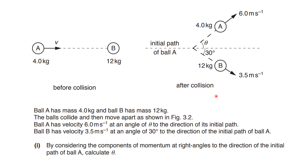Now we have a description of this diagram. Ball A has mass 4 kg and ball B has mass 12 kg. The balls collide and then move apart as shown in this picture. Ball A has velocity 6 m/s at an angle theta to the direction of its initial path. Ball B has velocity 3.5 m/s at an angle 30 degrees to the direction of the initial path of ball A. By considering the components of momentum at right angles to the direction of the initial path of ball A, calculate theta.